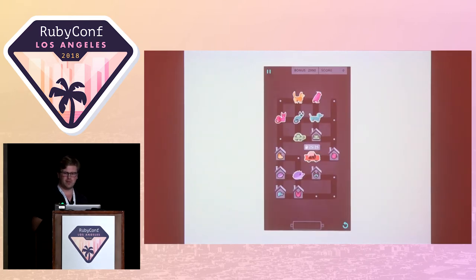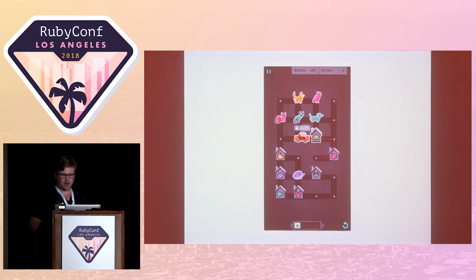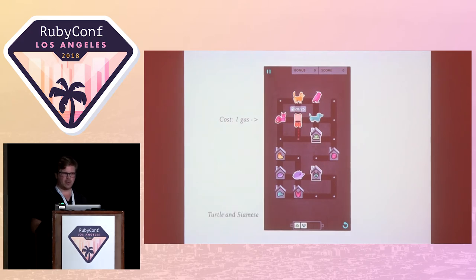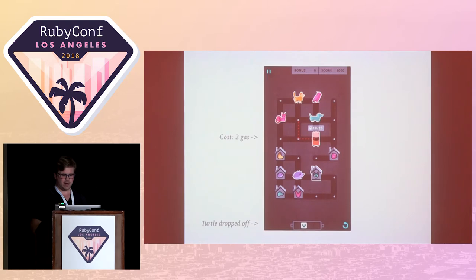Let's run through an example. We have 25 gas for the round. I'm going to pick up the turtle first — it costs four gas to go right, then up, then two to the left. The turtle is now removed from the game board and added to my car. Next I go up one square to pick up the Siamese — one more gas, so five total used. Now the turtle and the Siamese are both in the car. I drop off the turtle — his house is two away, now I have 18 gas. Then I drop off the Siamese, six gas away. Now I have zero pets in the car and 12 gas left to complete the rest of the board.